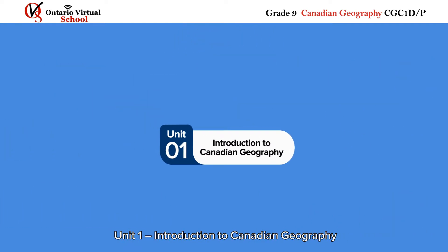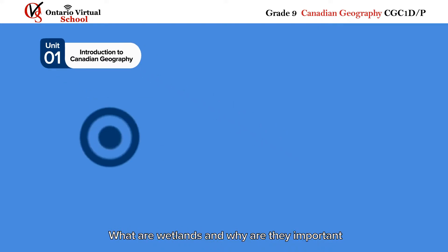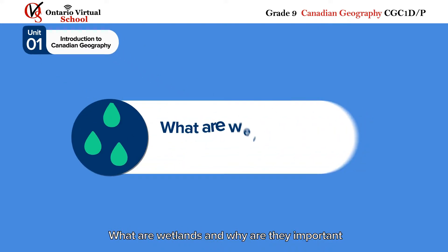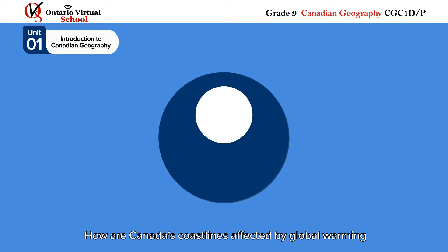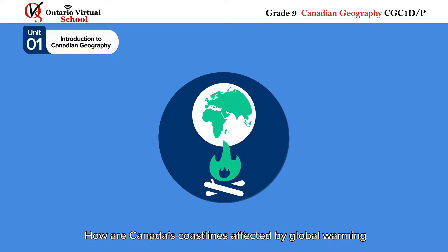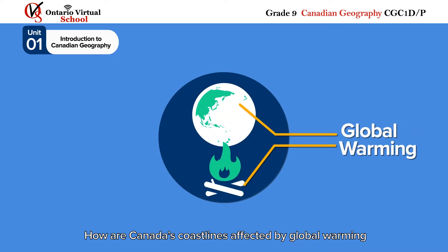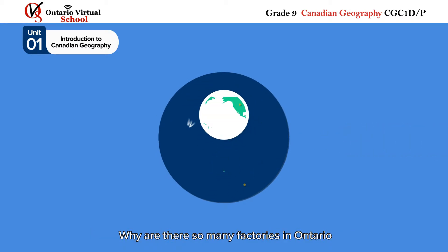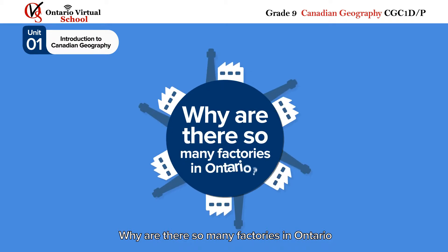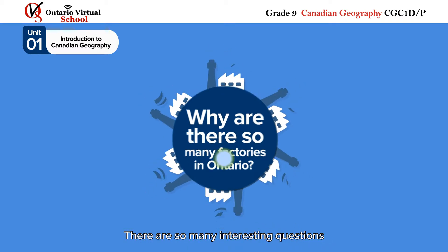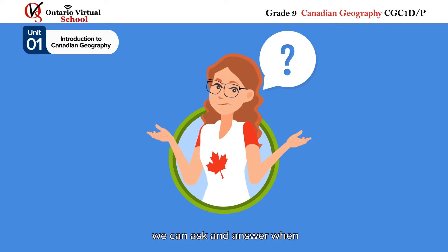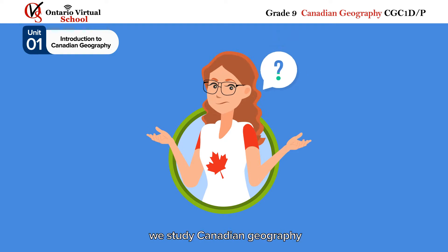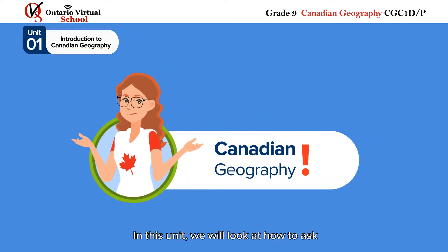Unit 1 – Introduction to Canadian Geography. What are the wetlands and why are they important? How are Canada's coastlines affected by global warming? Why are there so many factories in Ontario? There are so many interesting questions we can ask and answer when we study Canadian Geography.